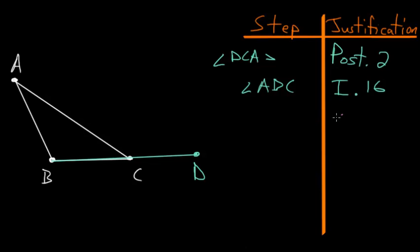Now let's use Common Notion number 2, which says that if we add equals to equals, then the wholes will be equal. So let's add this angle here, ACB, to each side of this expression. We've just added this angle ACB to each side of this inequality.